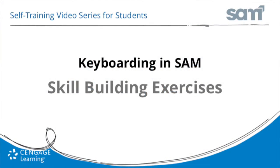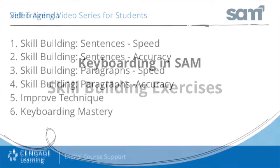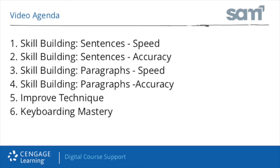Welcome to Cengage Learning's self-training video series for keyboarding and SAM. In this video, we will learn how to complete all the different types of skill building keying tasks located in the supplemental lessons, skill building lessons A through T. These include skill building sentences for speed, skill building sentences for accuracy, skill building paragraphs for speed, skill building paragraphs for accuracy, improved technique, and keyboard mastery.